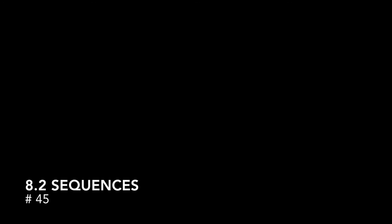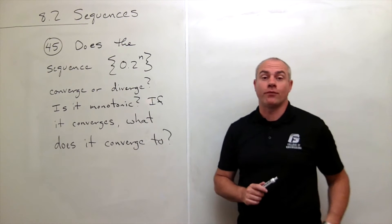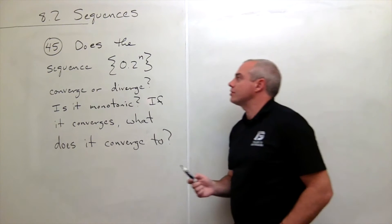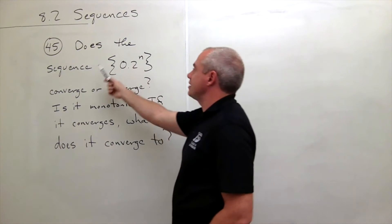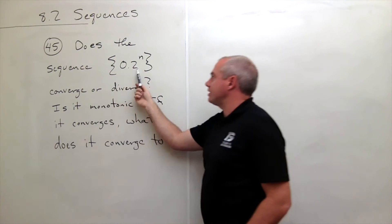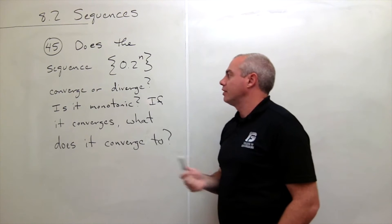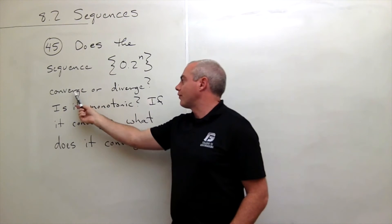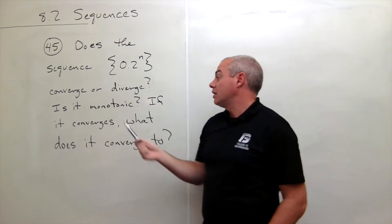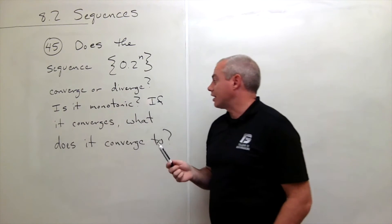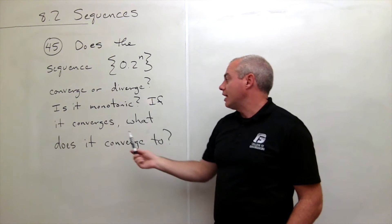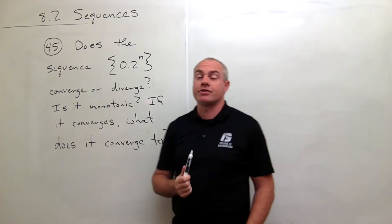I'm the Calculus Professor and today I'll be talking to you about sequences. In problem number 45, we'd like to answer the question: does the sequence 0.2 raised to the n power converge or diverge? Also, is it monotonic? And if it converges, what does it converge to?